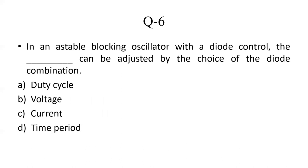The next question: in an astable blocking oscillator with diode control, what can be adjusted by the choice of the diode combination? Options: duty cycle, voltage, current, time period. In an astable blocking oscillator with diode control, by using different diode combinations — p-n junction diode, avalanche diode, Zener diode — we can change the duty cycle. So the correct option is Option A: duty cycle.